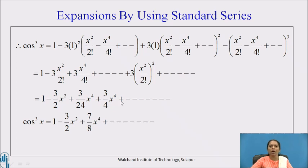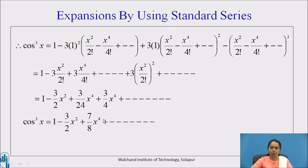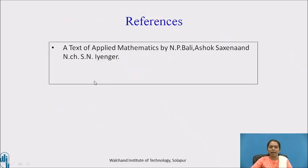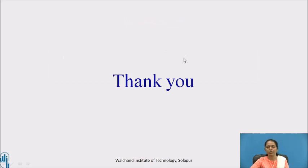This simplifies to 1 - (3/2)x² + 3·x⁴/24 + 3·x⁴/4 + .... After simplifying, cos³x = 1 - (3/2)x² + (7/8)x⁴ + and so on. I have referred to the text Applied Mathematics by N.P. Bali for the creation of this video. Thank you so much for watching and have a happy learning.